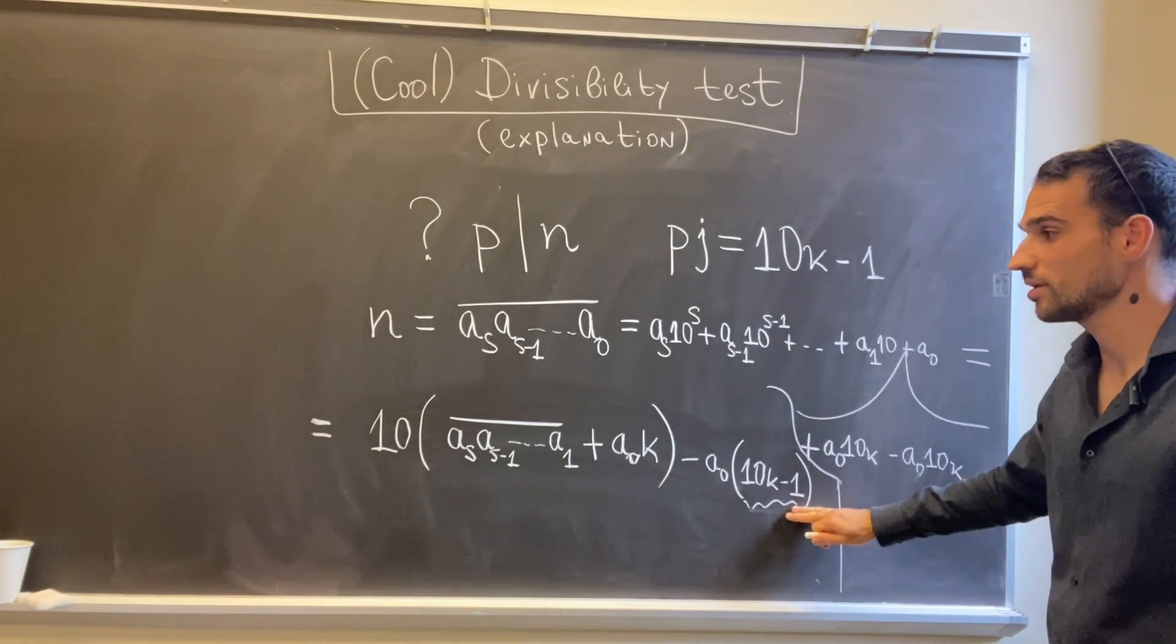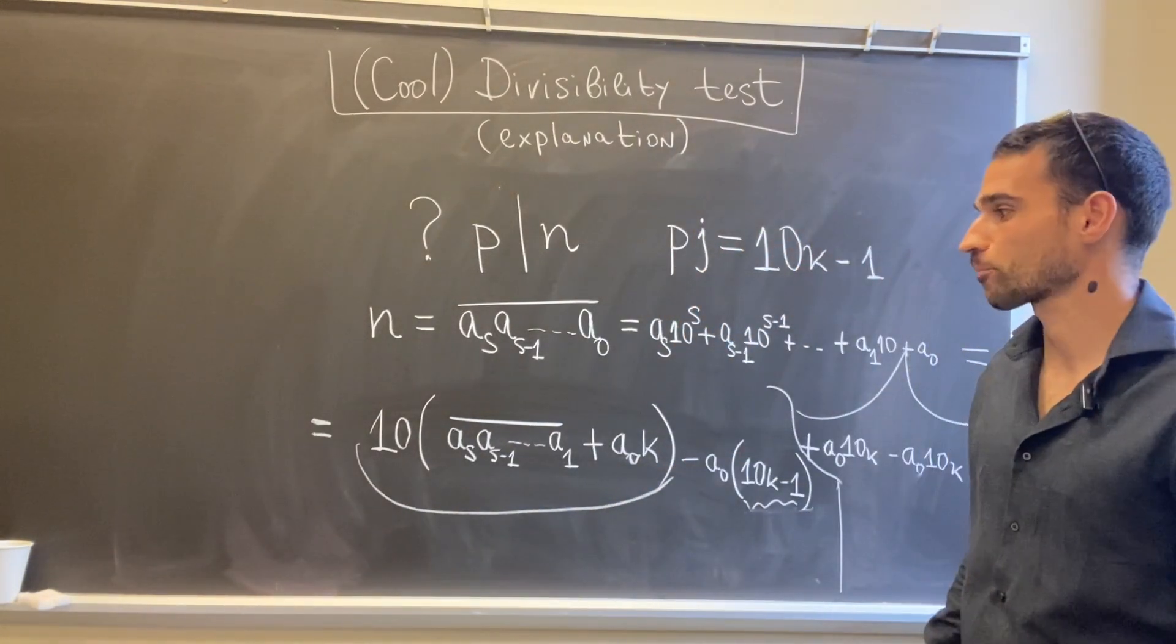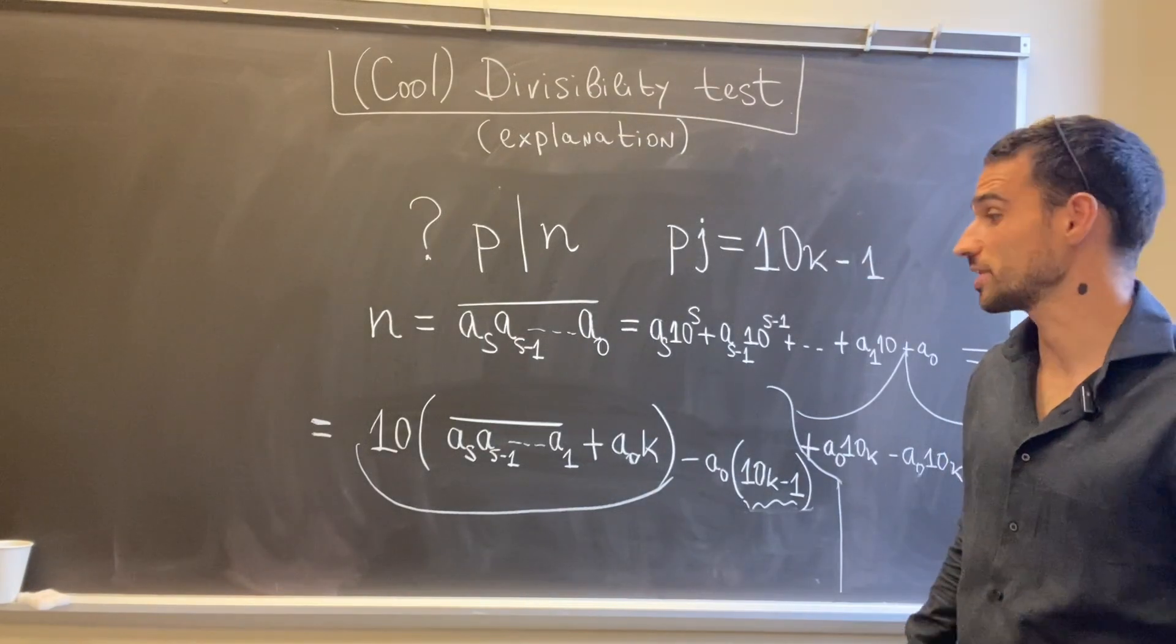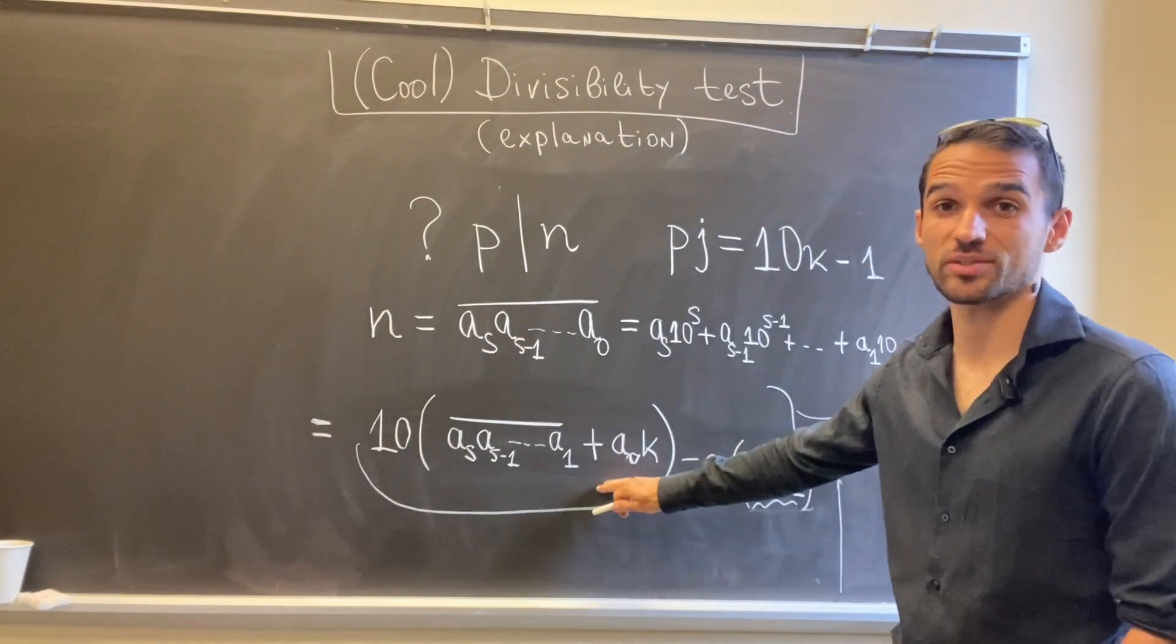So this part is divisible by p. As long as that part is divisible by p, then the whole number n will be divisible by p. And vice versa, if this is not divisible by p then n is not divisible by p.